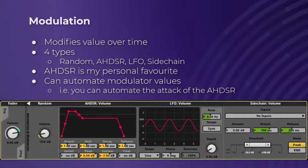Next up, we've got something kind of similar — modulation. It's super useful, but I haven't found too much use for it beyond one type. Basically all it does is change the value over time, and the type of modulator you use varies how it does this pretty drastically. There are four types: random modulators, AHDSR, LFO, and sidechain.